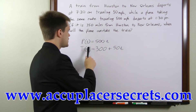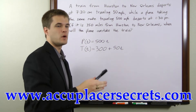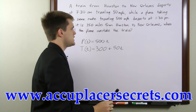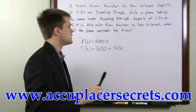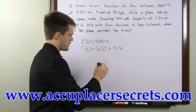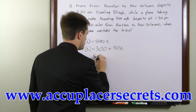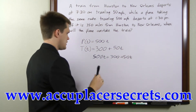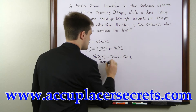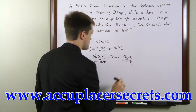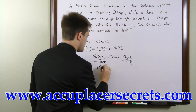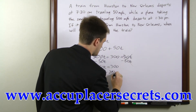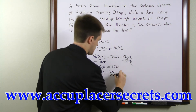To figure out when the plane overtakes the train — or when they're at the same position — we set the two equations equal and solve for t. So 500t equals 300 plus 50t. Subtracting 50t from both sides gives us 450t equals 300, so t equals 300 over 450, which is 2 over 3.